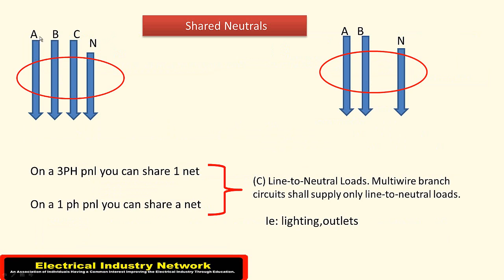Here you'll see A, B, and C phases sharing one neutral on a three-phase system. On a single phase you have A and B sharing one neutral, which is allowed, but we're going to have to take a look at section B as far as that is concerned. Section C explains that your line-to-neutral loads — a multi-wire branch circuit shall supply only line-to-neutral loads, like lighting outlets, etc.